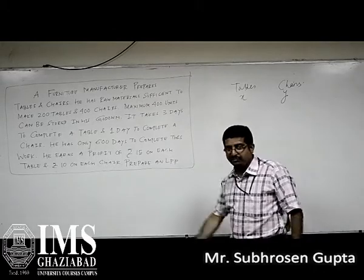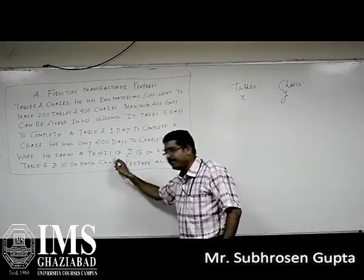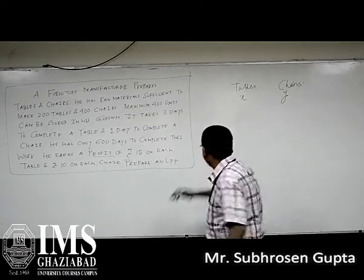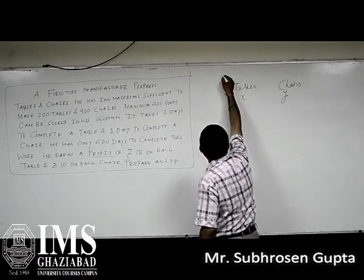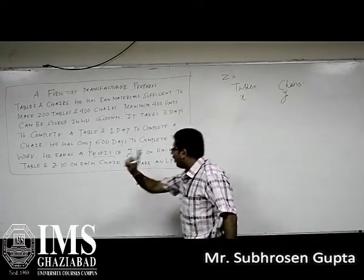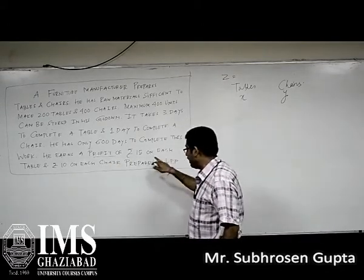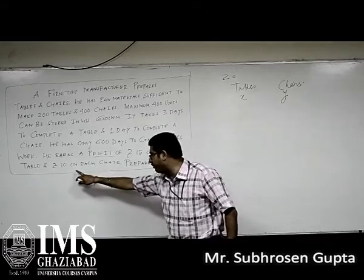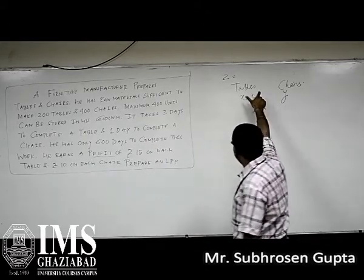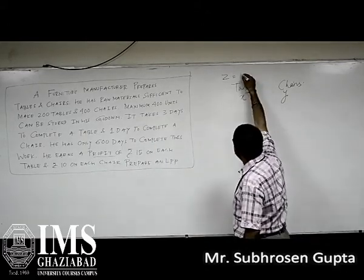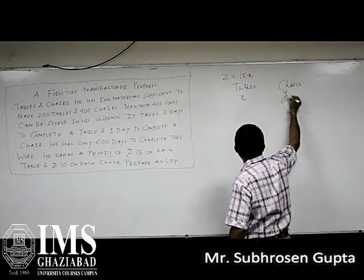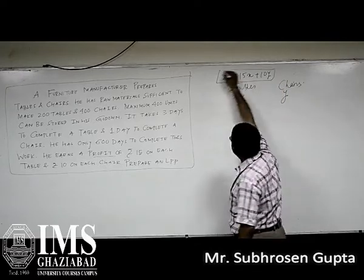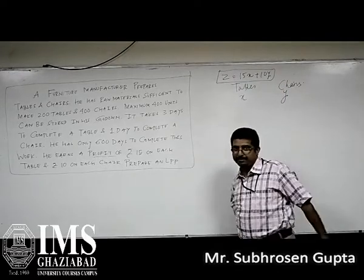The objective function will either be maximum profit or will minimize cost. We will always put Z for maximization. So, our Z function will be: for one table we earn a profit of 15 and on each chair we earn a profit of 10. So, if we are preparing X tables we will be getting 15X, and for Y chairs we will be getting 10Y.